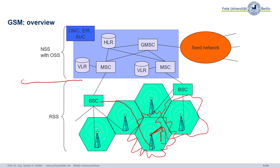Shown here in shades of blue is the Network Subsystem, which also comprises the subsystem responsible for operation and maintenance. The Network Subsystem contains many switches, the so-called MSCs. Each MSC is responsible for several Base Station Controllers — just very rough figures, for example an MSC could be responsible for something like up to one million users. Several BSCs each again have several Base Transceiver Stations. How many BTSs belong to a BSC and how many BSCs to an MSC depends on the network operator and the vendor of the equipment.